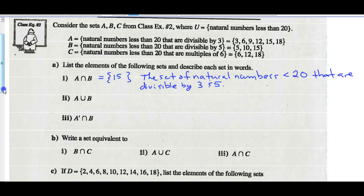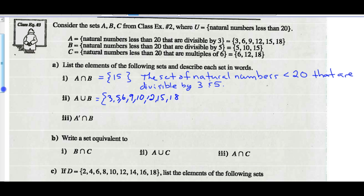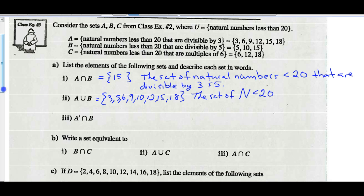A union B — which ones are elements of A or B or both? So 3, 5, 6, 9, 10, 12, 15, and 18. Those are numbers that belong to A or B or both. This is the set of natural numbers less than 20 that are divisible by either 3 or 5.